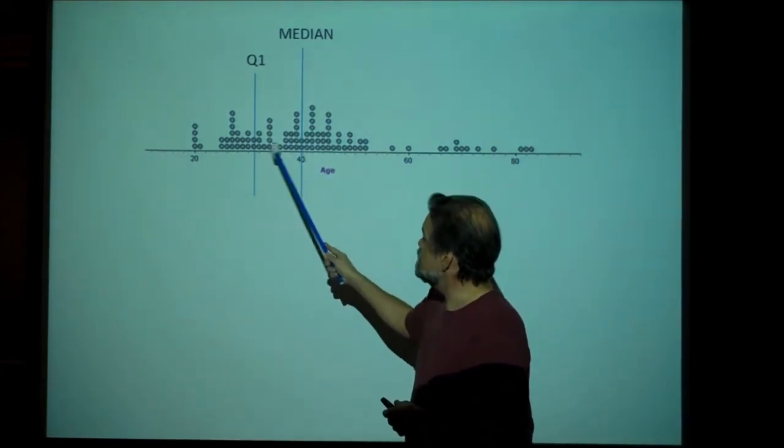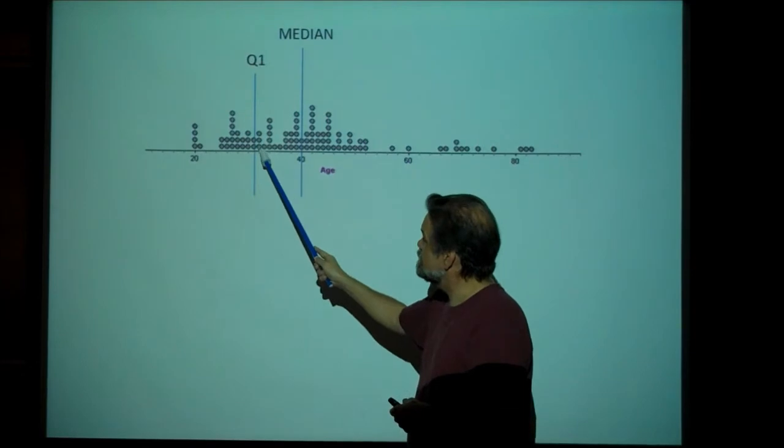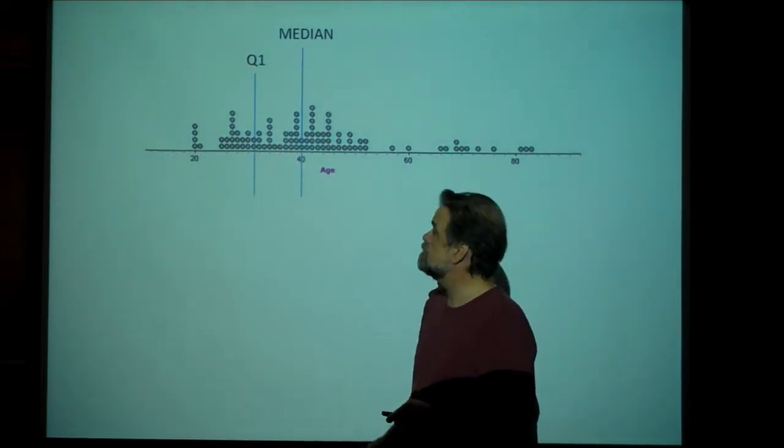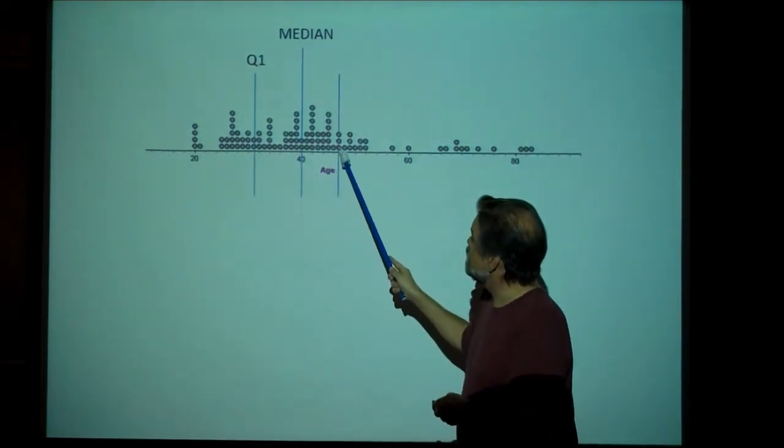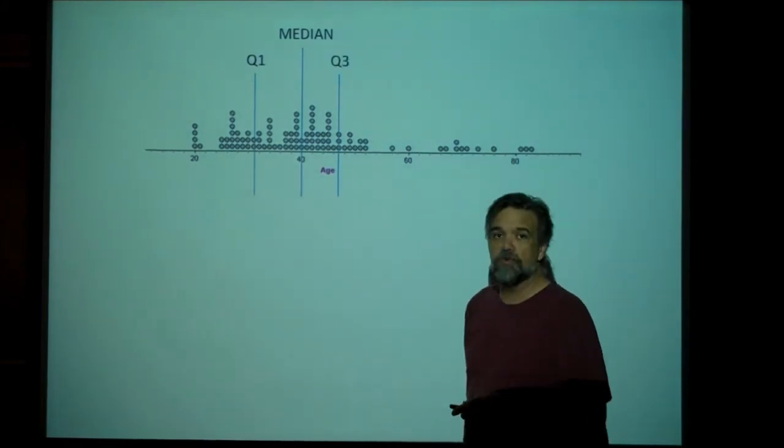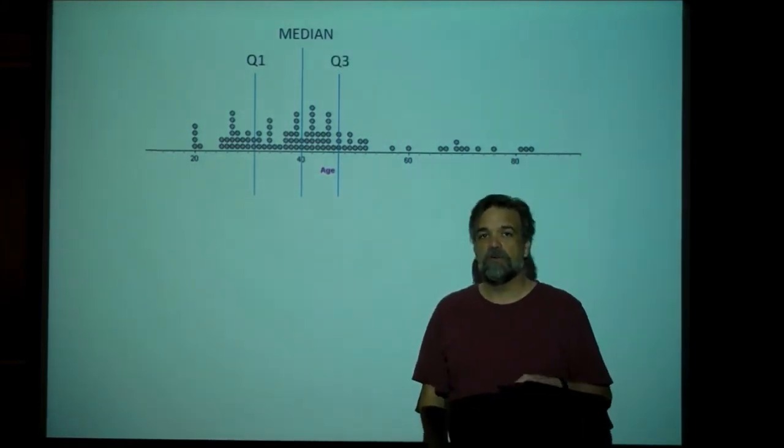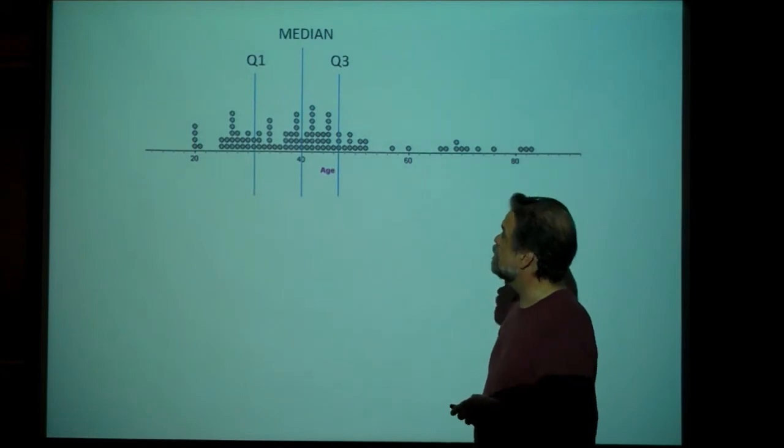So this is the median of the entire data set. This is the median of the lower 50%. Here's the median of the upper 50%, which we call Q3 or the upper quartile or the third quartile of our data set.